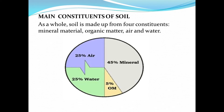This is the diagram representing the different soil constituents. In an ideal soil we have 25 percent air, 25 percent water, 5 percent organic matter, and 45 percent mineral matter.